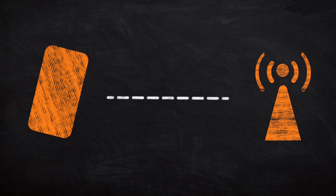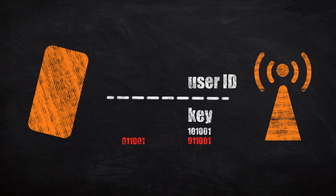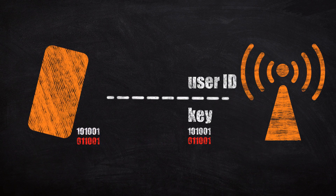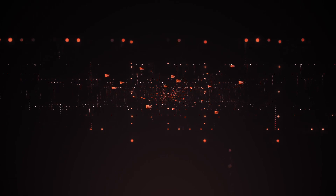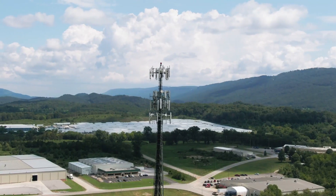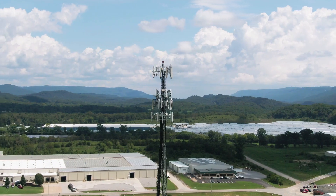Upon turning your device on, your user ID along with the authentication key is sent to the cell service provider. The provider uses the key to encrypt a random number, which is then sent back to your device. Your device then decrypts what was sent, and if the result matches the random number, the identity of the subscriber is revealed along with the services that are available. The provider then evaluates if the device is allowed to use the network.